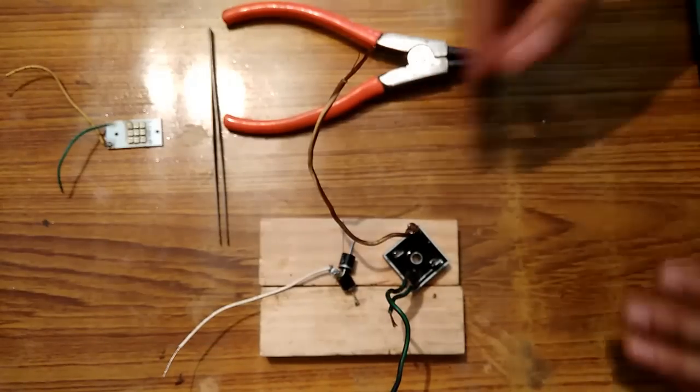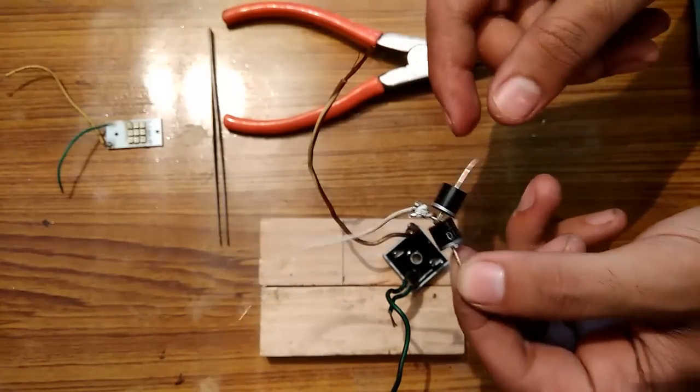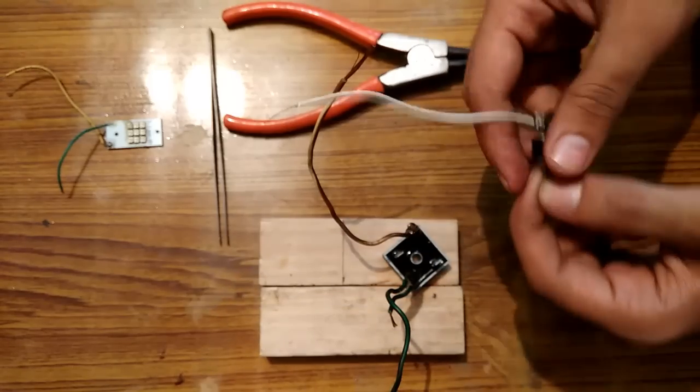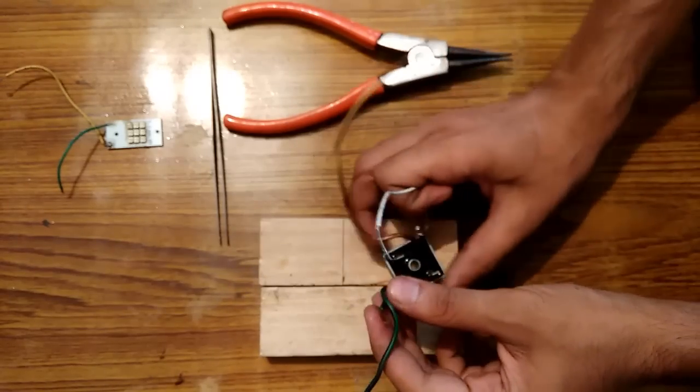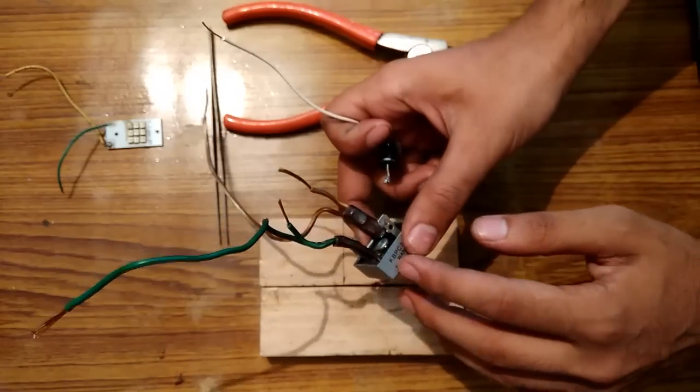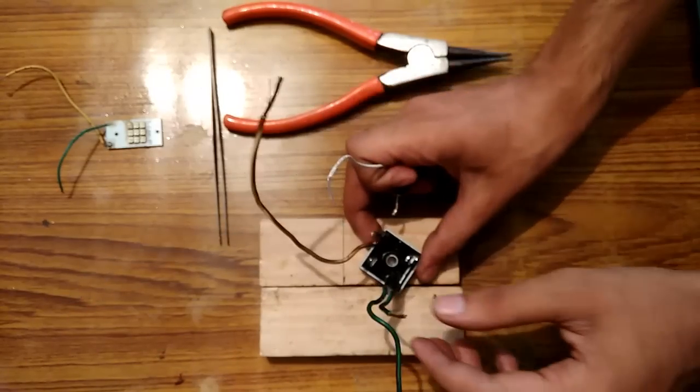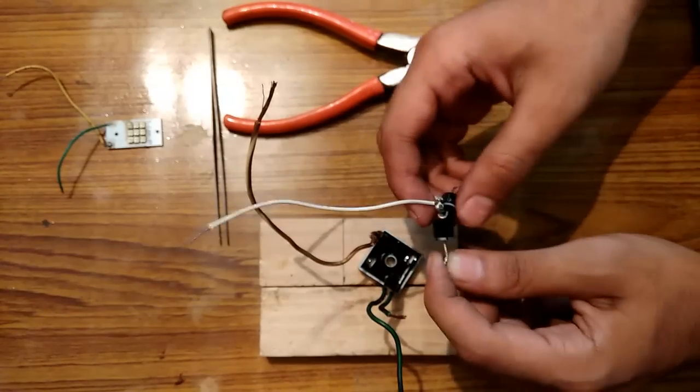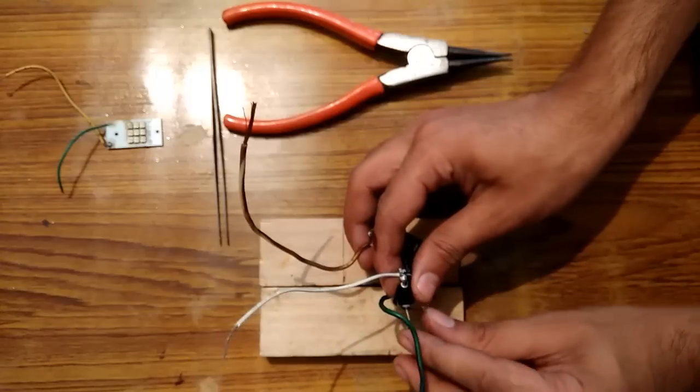Now the final step is you have to connect the two diodes to these two wires, smaller ones. Do it like this. Now this one is the positive. So we have to connect the negative of the diode to the positive. So it will be like this.